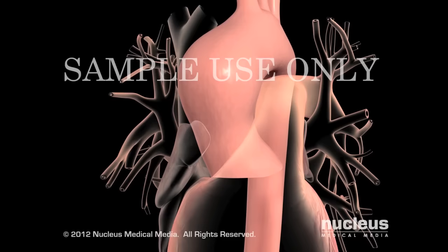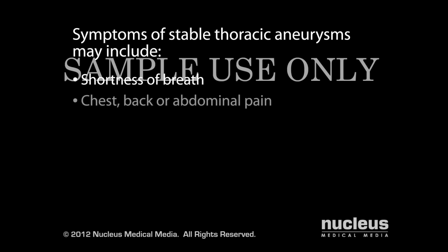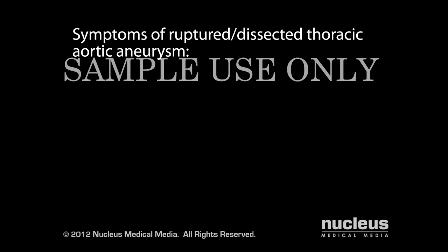Most thoracic aneurysms have no symptoms. However, when they reach larger sizes, various symptoms may appear depending on the severity and location of the aneurysm. Symptoms of stable thoracic aneurysms may include shortness of breath, chest, back, or abdominal pain, difficulty swallowing, and hoarseness.